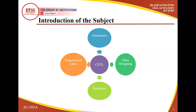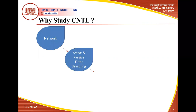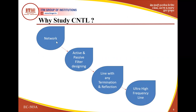Why study CNTL? First, network development — then active and passive filter designing is important. Initially we develop networks like symmetrical and asymmetrical networks, and there is a requirement of proper impedance matching — image impedance and iterative impedance — because without impedance matching the information will never be transferred. Then we design active and passive filters, which are important from an industry application point of view, with different types of applications in which we use filters.